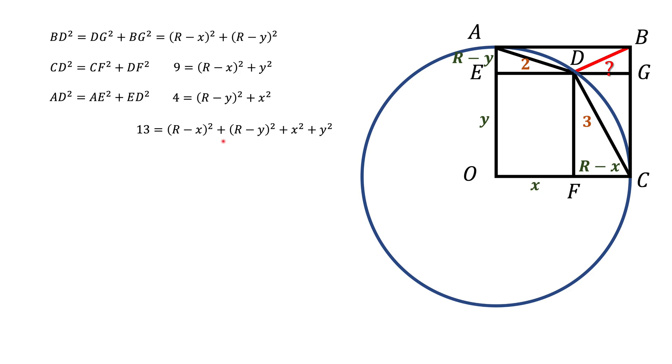We will figure out what BD squared is if we find what X squared plus Y squared is. To find what X squared plus Y squared is, look at the rectangle OEDF. X is one side of this rectangle. Y is another side of this rectangle.